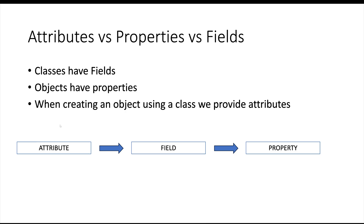When we use a class to create an object, the information we put into the fields is known as attributes. The flow is: we provide attributes into the fields, and the object that gets created has properties. That's probably as simple as I can make that explanation.